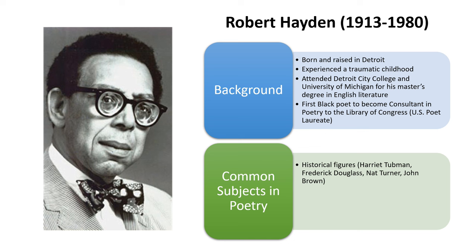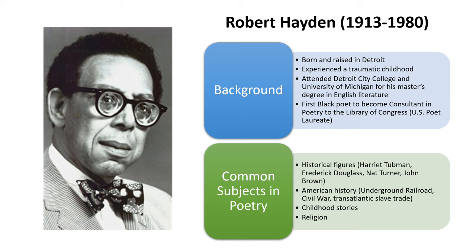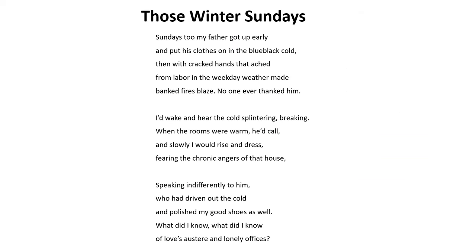In his poetry, Hayden ruminates on different events and elements of American history, including the Underground Railroad, the Civil War, and the Transatlantic Slave Trade. Moreover, he discusses childhood stories and religion in his works. Here we have one of Robert Hayden's poems titled Those Winter Sundays, published in 1962.